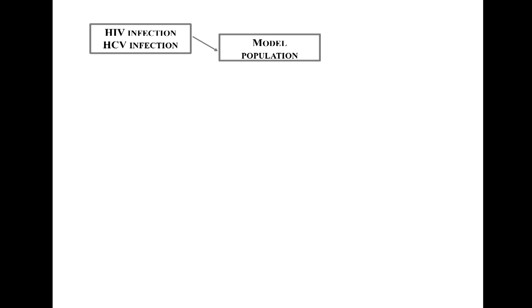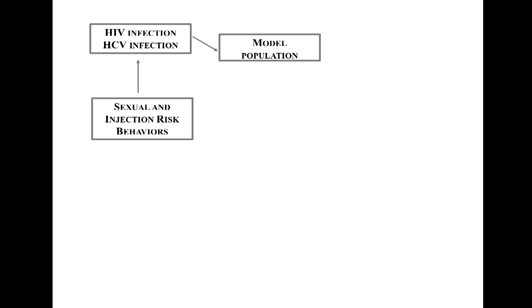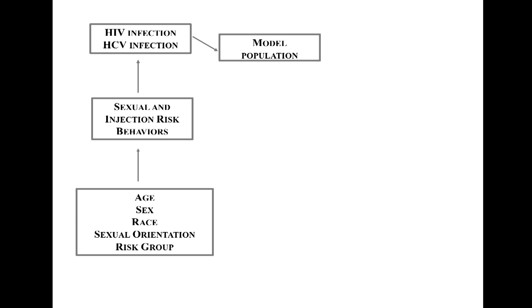Let's talk about the implementation. We have individuals in our model, and we're interested in figuring out their risk of acquiring HIV and HCV. This is fundamentally dependent on their risk behaviors — someone centrally located in an injecting network is at much higher risk. Those risk behaviors are a function of key characteristics: to every individual in the model, we assign an age, sex, race, sexual orientation, and a risk group — such as someone who abuses drugs, injects drugs, or doesn't use drugs at all. These assignments are made so that the model population as a whole is reflective of the demographics of Seattle.